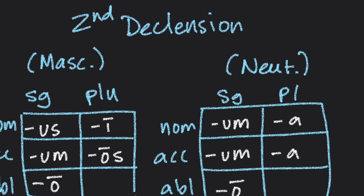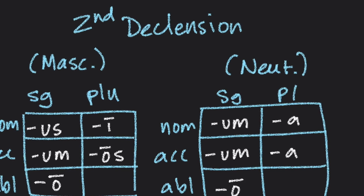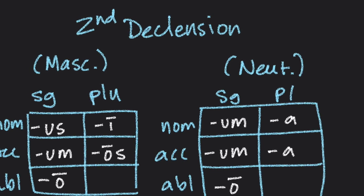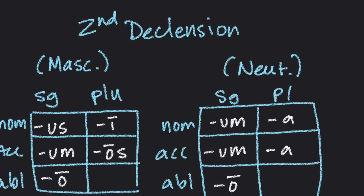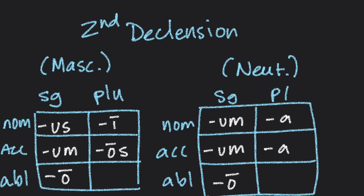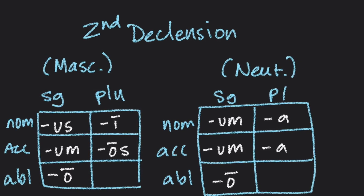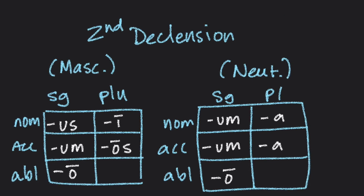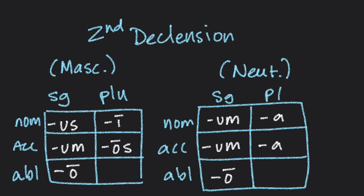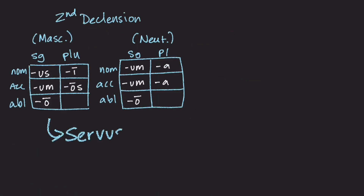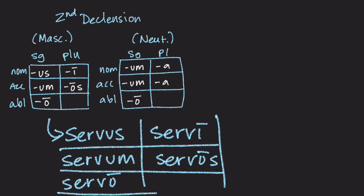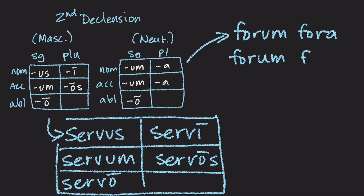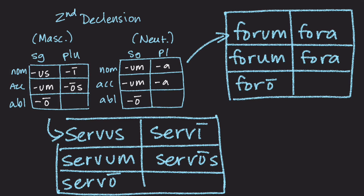If we look at our second declension nouns, there is a second declension masculine and a second declension neuter, also listed in your foldable. The singular ending for a second declension nominative always ends in U-S; the accusative always ends in U-M; and the ablative always ends in long O. For the neuter, both the nominative and accusative singular end in U-M — the difference is determined by the function in the sentence. An example of a second declension masculine word is Serwus, meaning slave, which declines: Serwus, Serwum, Serwo, Serwi, Serwos. An example of a neuter second declension noun is Forum, which declines: Forum, Forum, Foro, Fora, Fora.